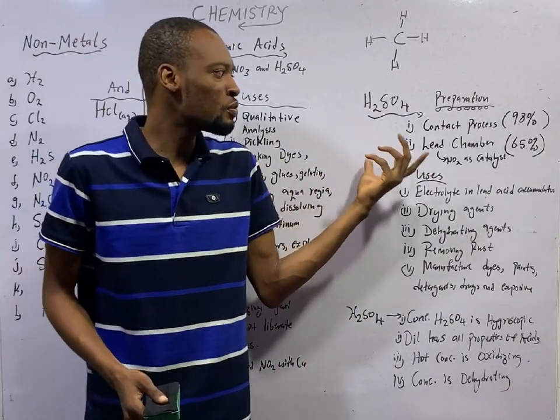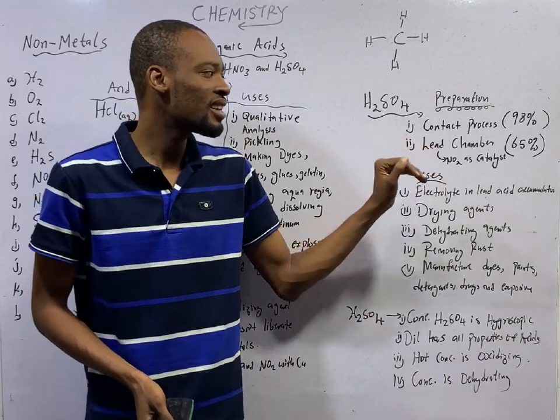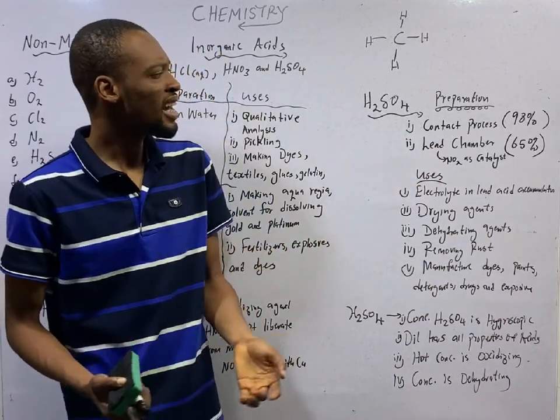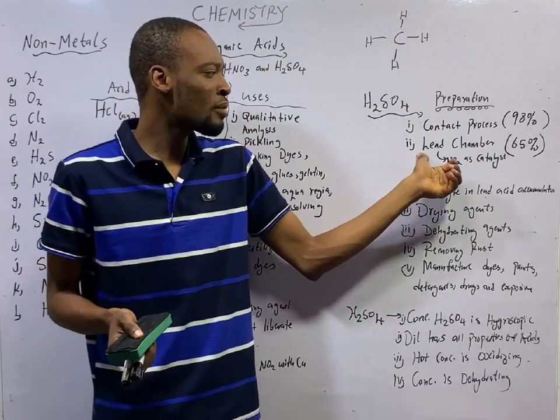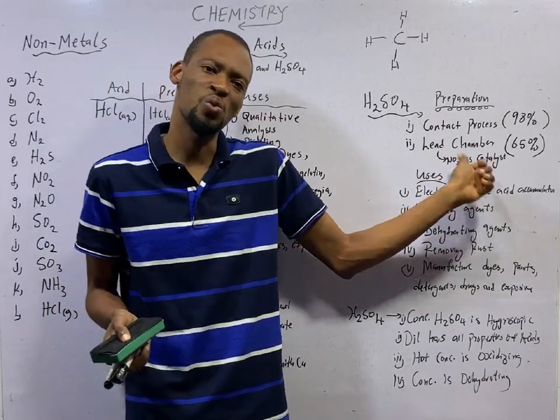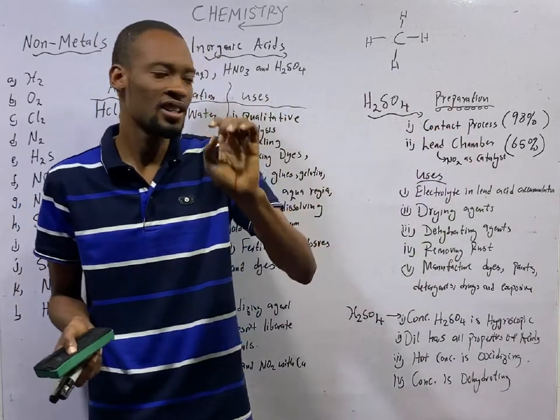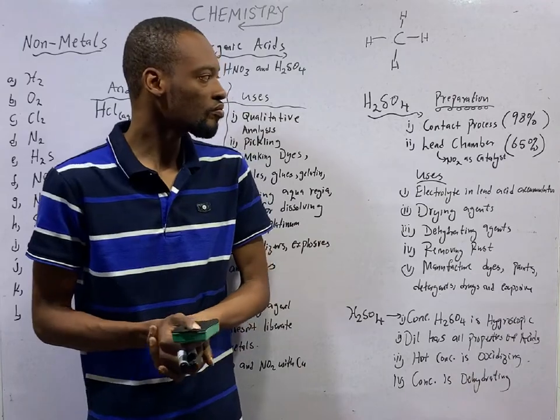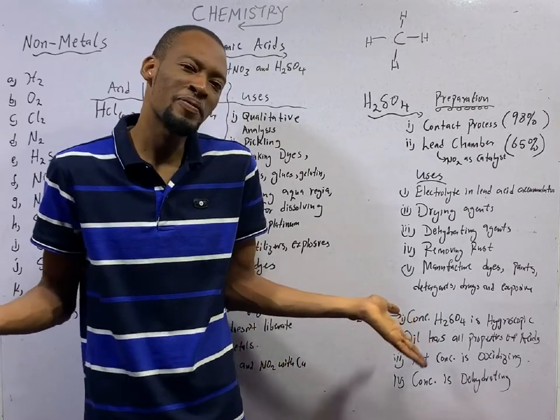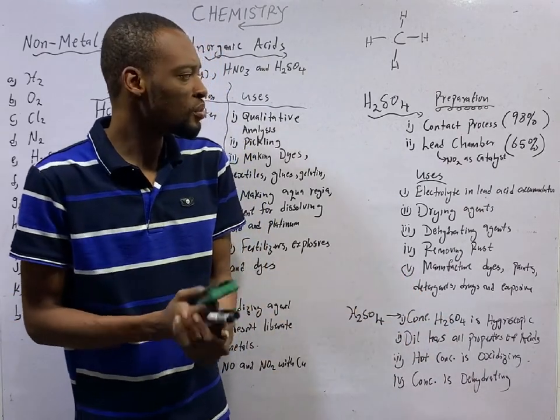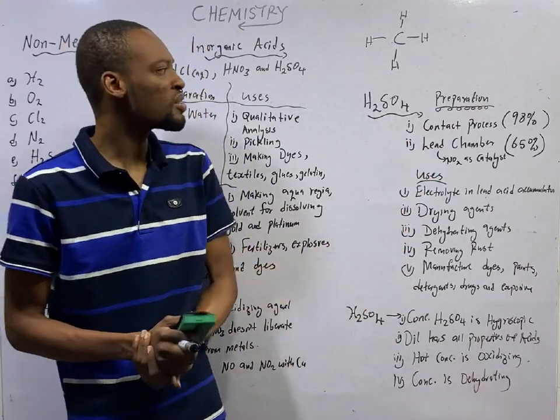H2SO4 is prepared via contact process in the industry and it is prepared via lead chamber process. Lead chamber process is similar to contact process. Just that, in lead chamber process, nitrogen(IV) oxide NO2 is used as catalyst. While in contact process, vanadium oxide is used as catalyst. Contact process will give you 98% H2SO4. But if you need just 65% H2SO4, the best method for you is the lead chamber method.